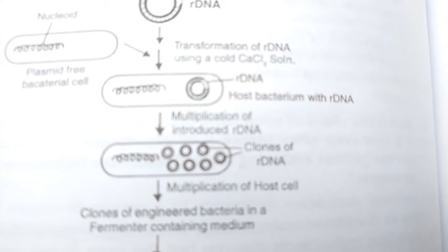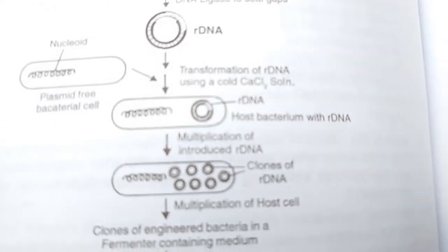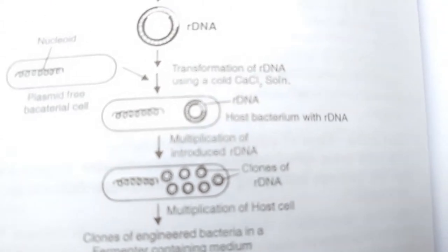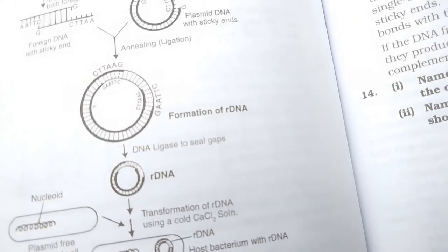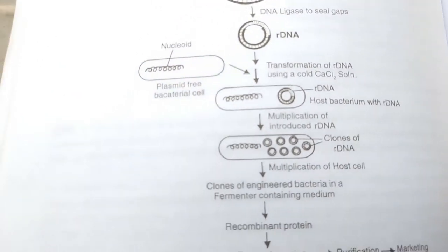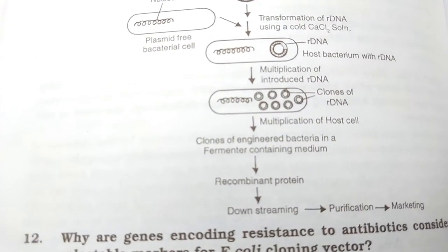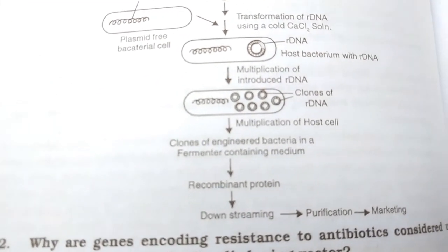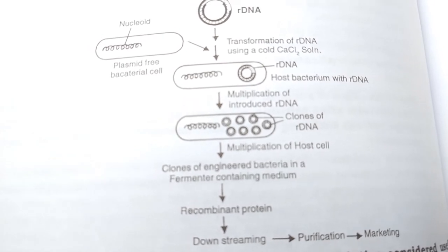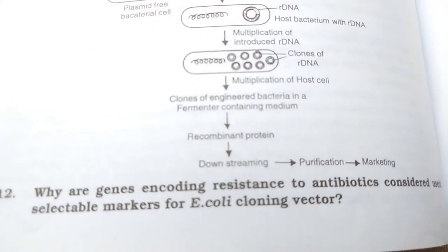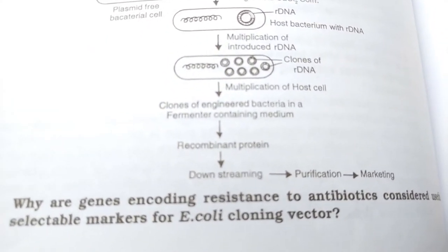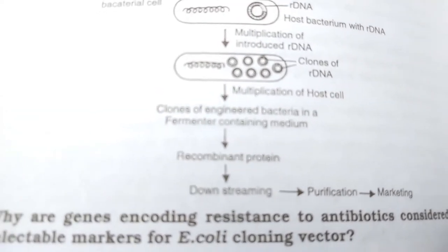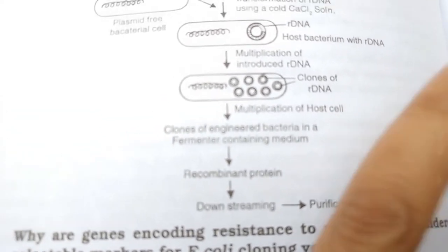Clones of engineered bacteria are grown in a fermenter containing the medium, then the recombinant protein is obtained, followed by downstream purification and marketing. The next question: why are genes encoding resistance to antibiotics considered as selectable markers for E. coli cloning vectors?